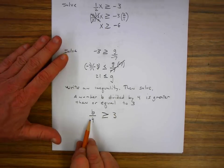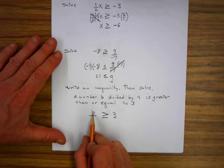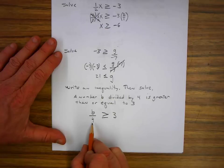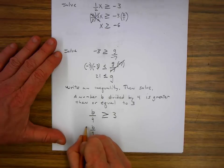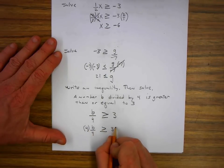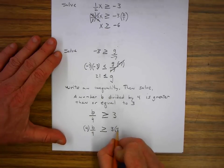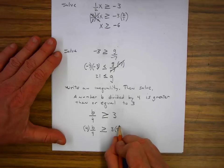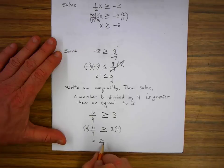Now that we've written the inequality, we need to solve it. To isolate the variable b, I multiply both sides by four. I write b over four times four on the left. We don't change the direction of the sign because we're not multiplying by a negative number. And we write times four on the right side. Four over four becomes one, so I'm left with b on the left is greater than or equal to three times four, which is twelve.